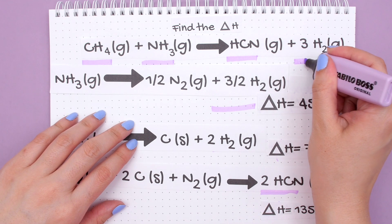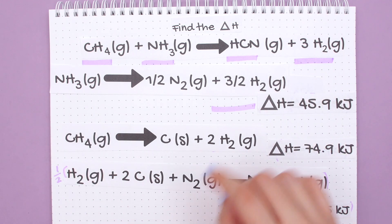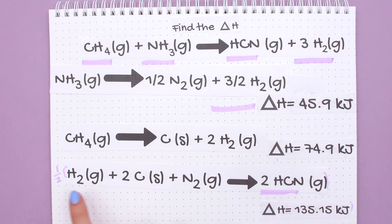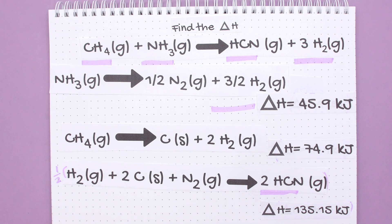Looking at that 3 H2 on the product side, you'll notice that H2 is actually in every single below reaction, so we won't change anything else on our below reactions. Instead we will add up all the reactions together and check how many H2s we are left with at the end.